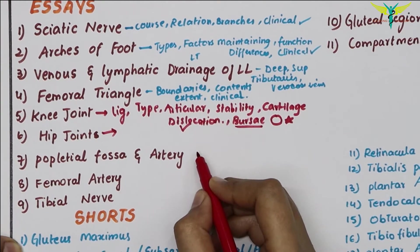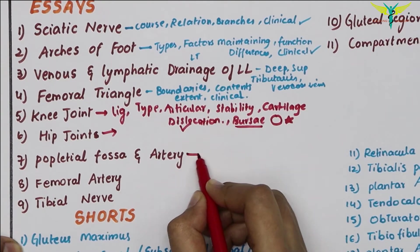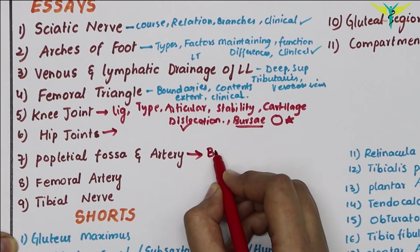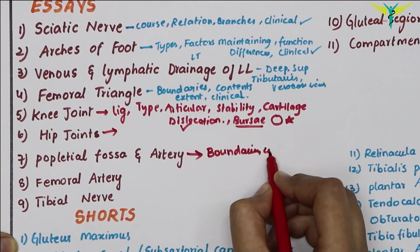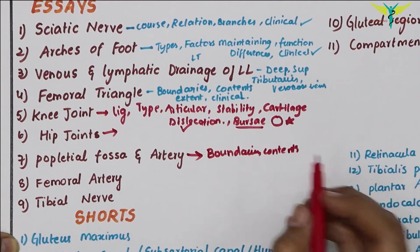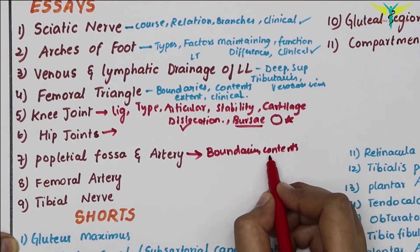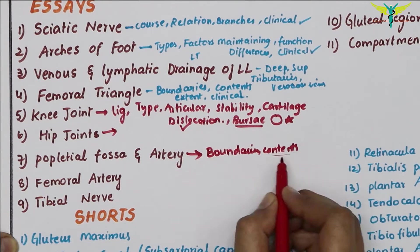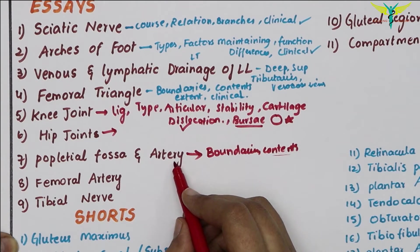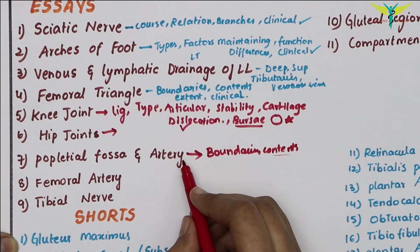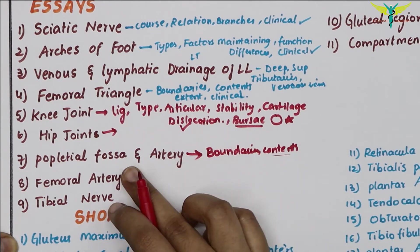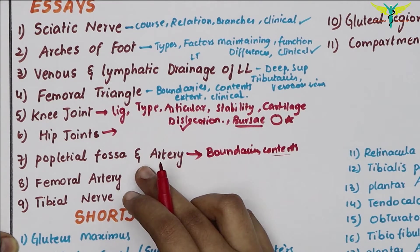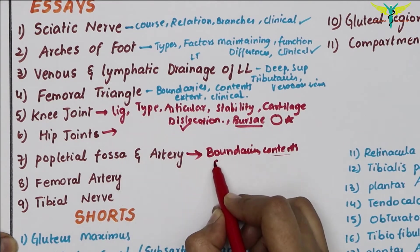The next essay question is the popliteal fossa and the popliteal artery. It can be asked as boundaries and contents — you should describe the contents with a diagram — the branches of the popliteal artery, the shape of the fossa, the extent, and the clinical aspects.